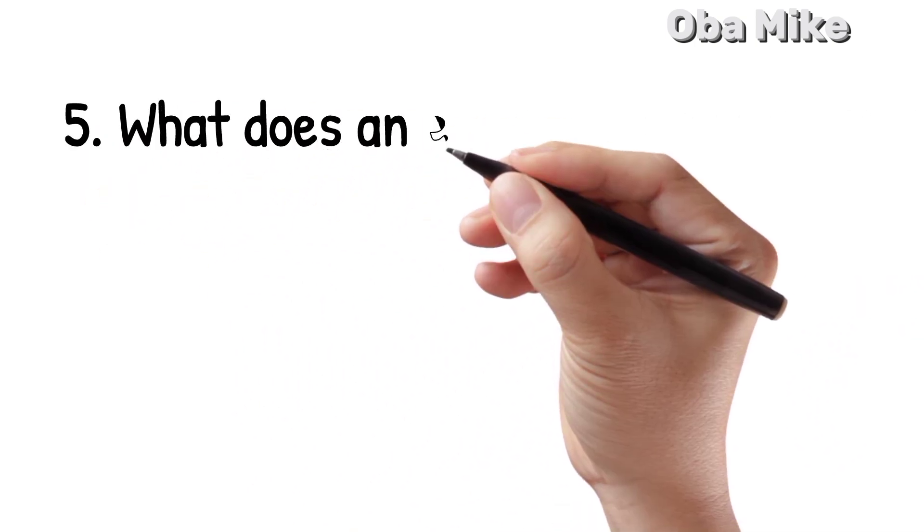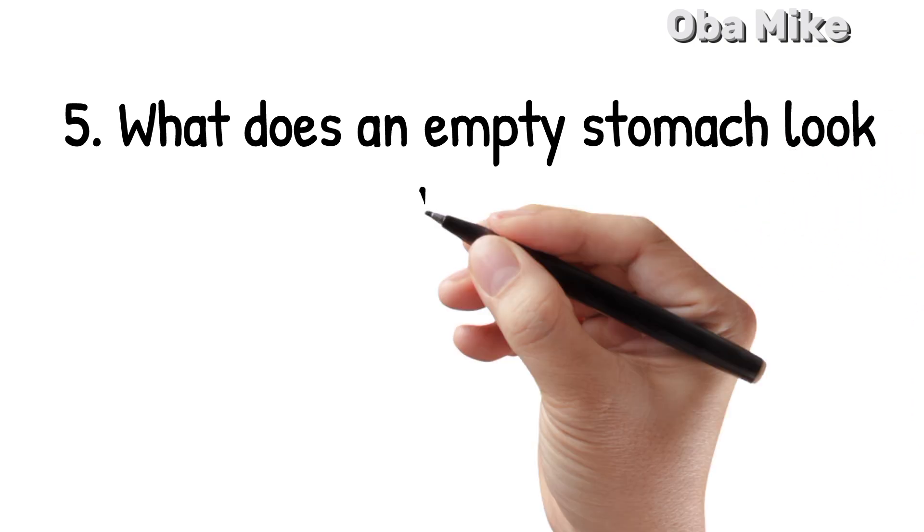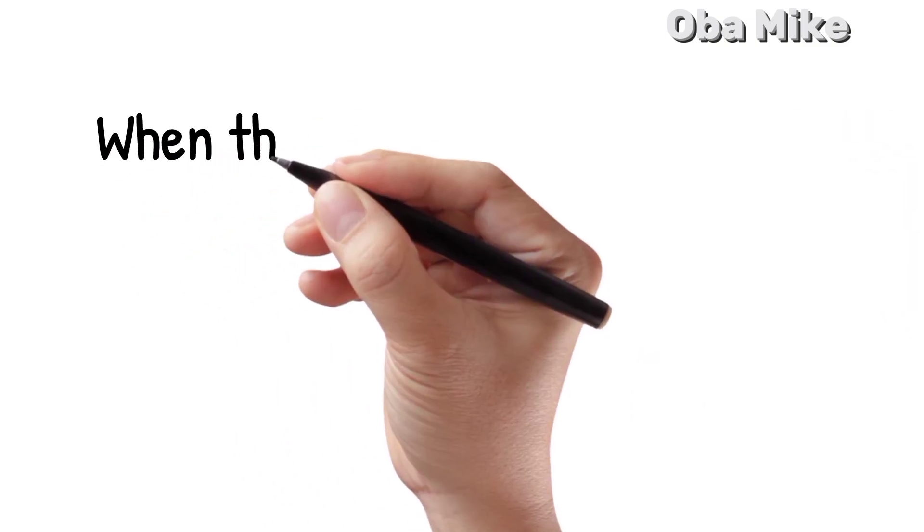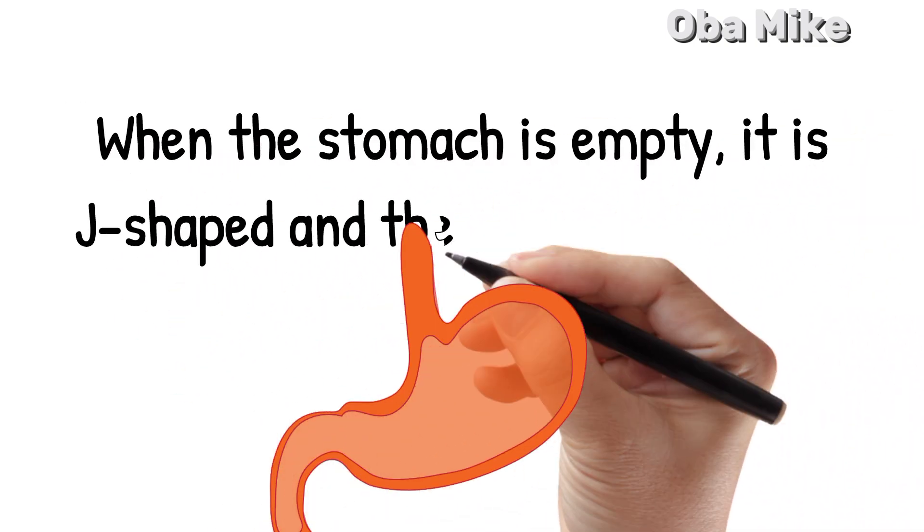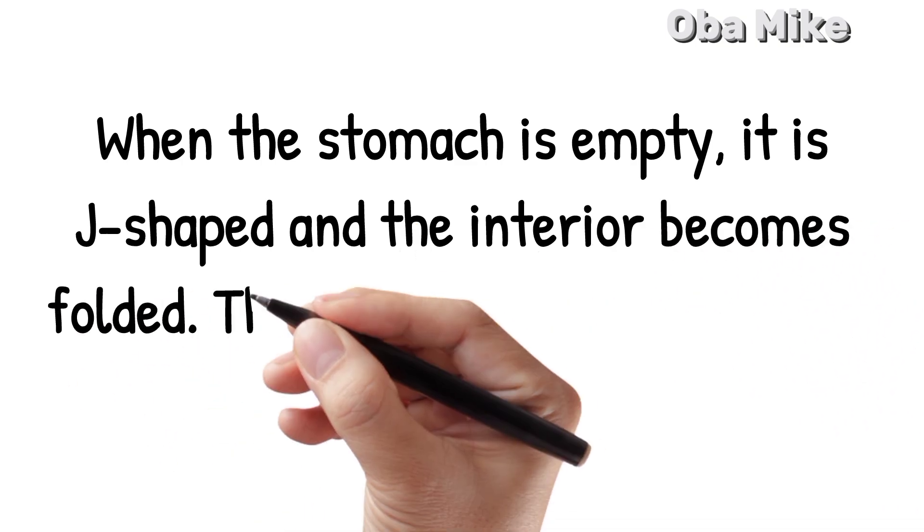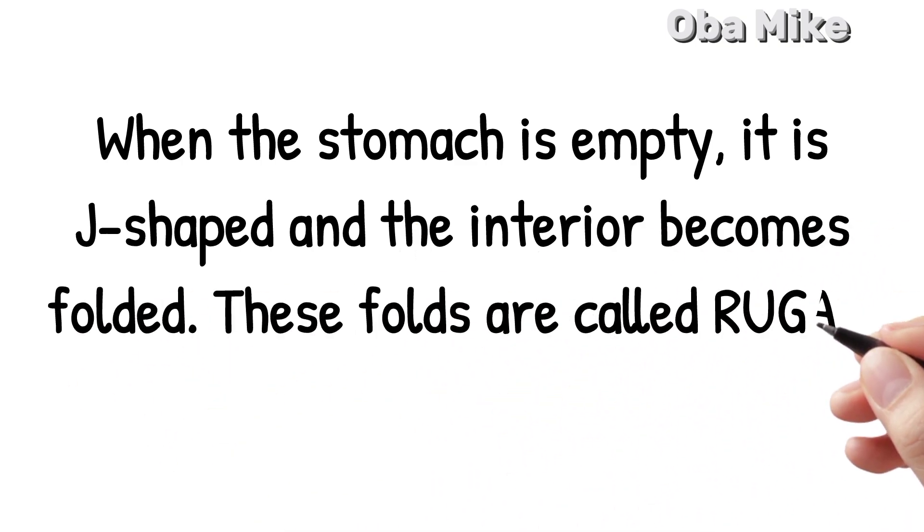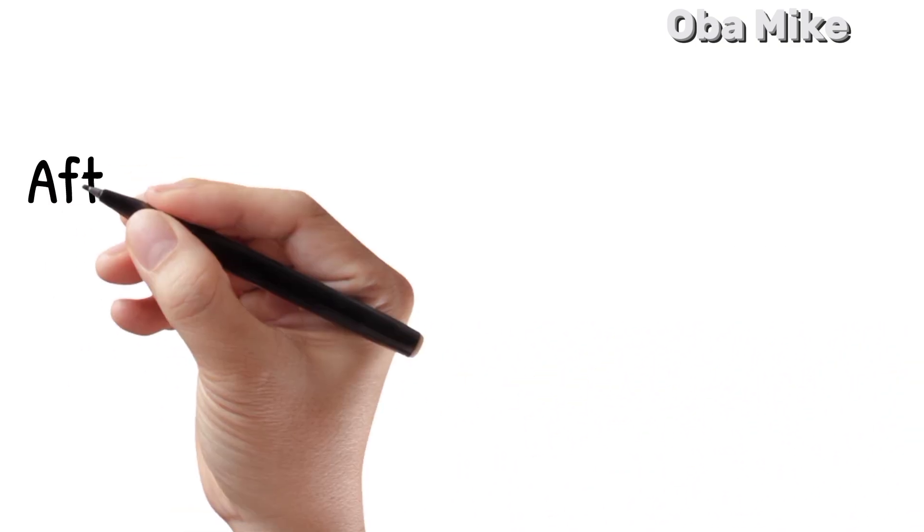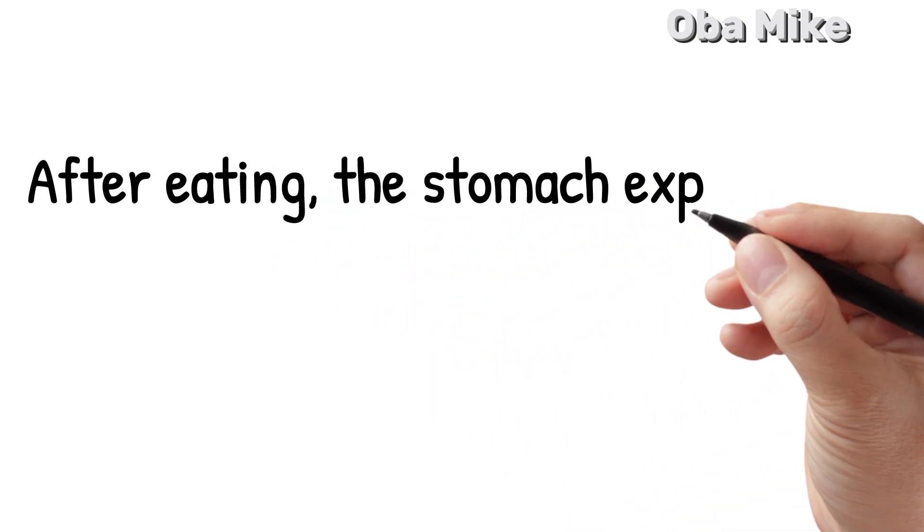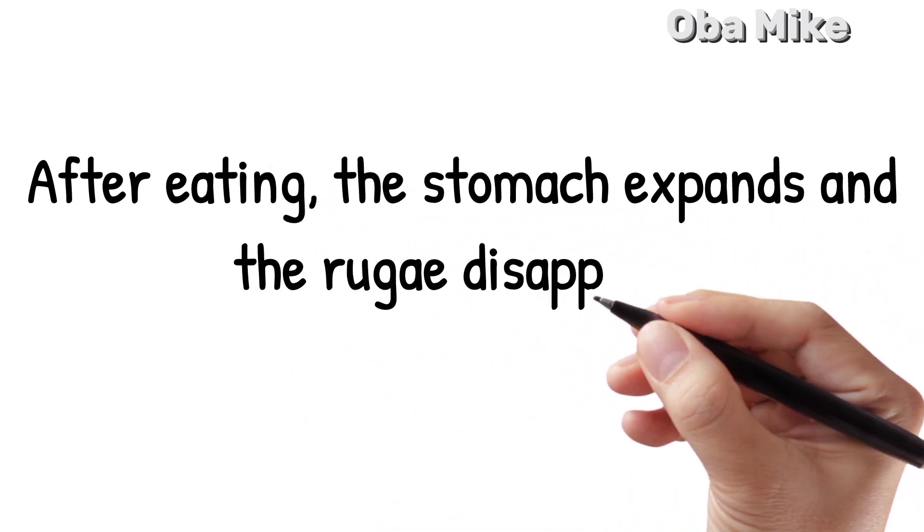Number 5. What does an empty stomach look like? When the stomach is empty, it is J-shaped and the interior becomes folded. These folds are called rugae. After eating, the stomach expands and the rugae disappear.